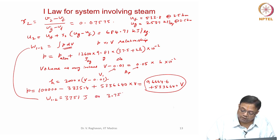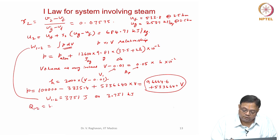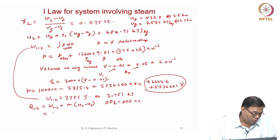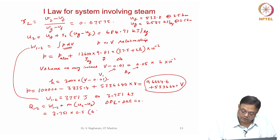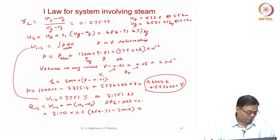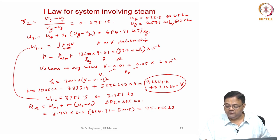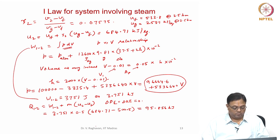Heat Q₁₂ = W₁₂ + m×(U2 - U1), with ΔKE = ΔPE = 0. So Q₁₂ = 3.751 + 0.5×(684.71 - 500.5) = 95.856 kJ. Note that pressure increases linearly with volume, and both states 1 and 2 are saturated mixture states.